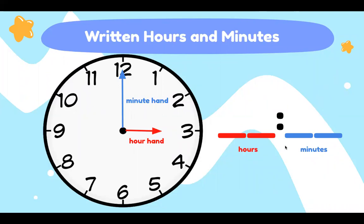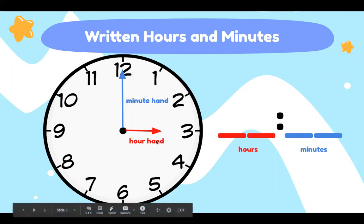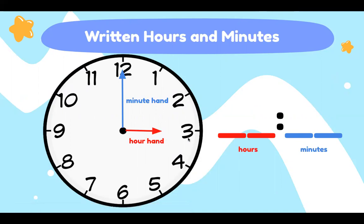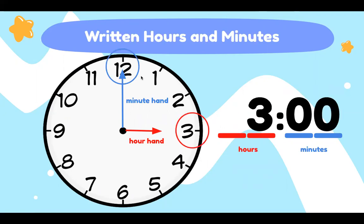When we write hours and minutes the digital way we put hours first and then minutes. So what time is it right now? The hour hand looks at the hours which are these numbers on the inside. So what's the hour hand pointing to? It's pointing to three. And when the minute hand is pointing up it is o'clock. So we have three o'clock.